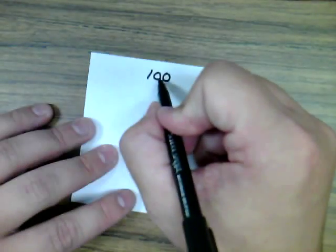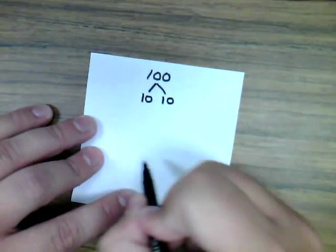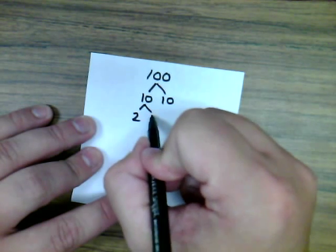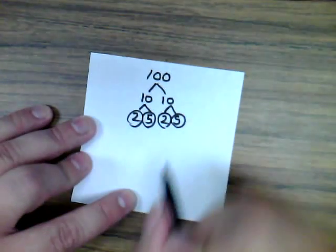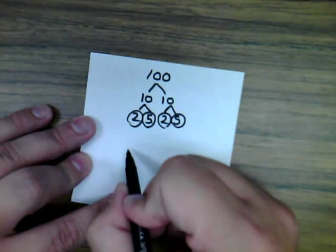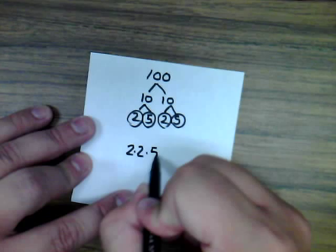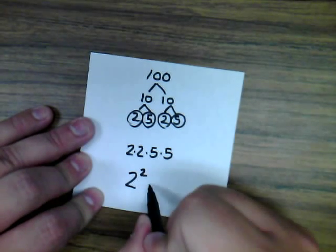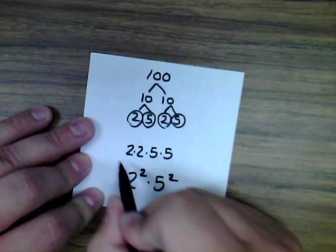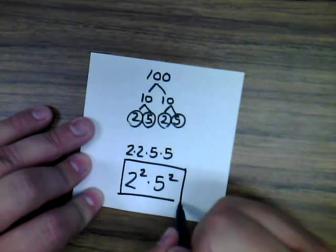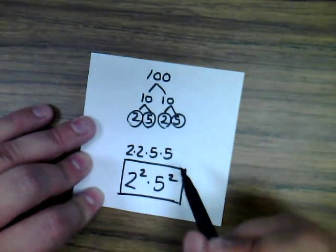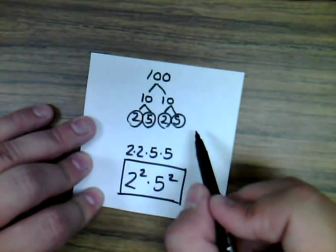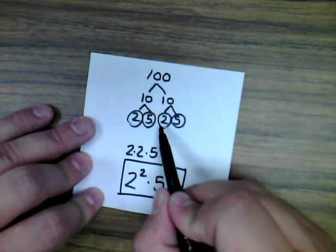When I break down 100: 10 times 10 — both composite. Each 10 breaks down as 2 times 5. Again, we're left with only prime numbers: 2 times 2 times 5 times 5, or in exponential form: 2 squared times 5 squared. Box in the answer. Checking: branches end with berries, berries are all prime, and 2 times 5 is 10, times 2 is 20, times 5 is 100 — answer is correct.